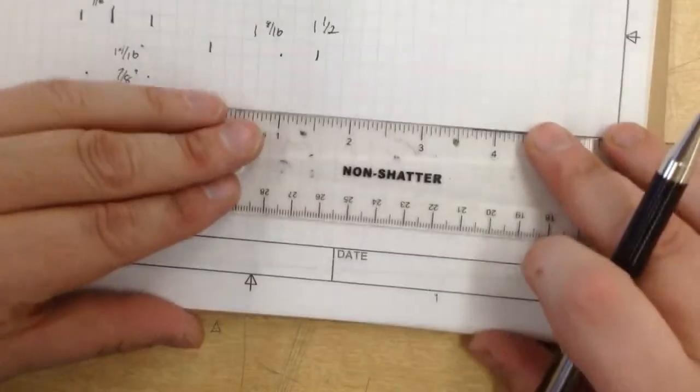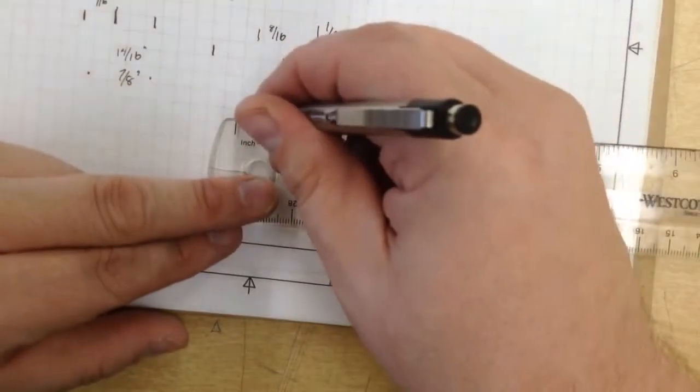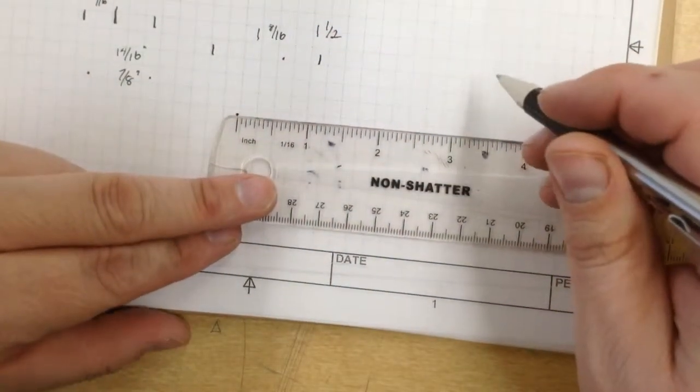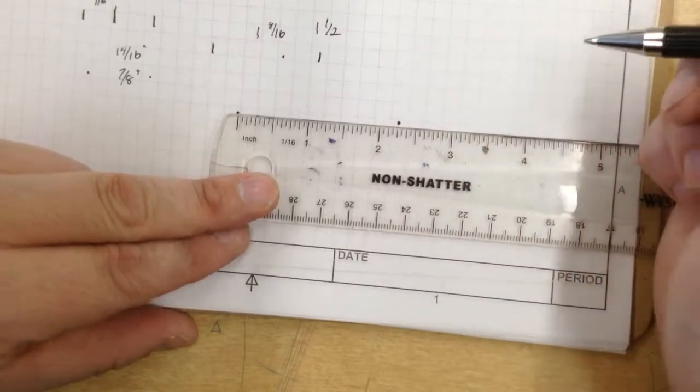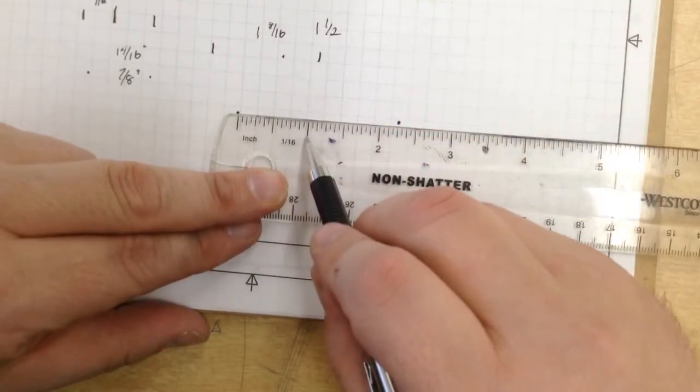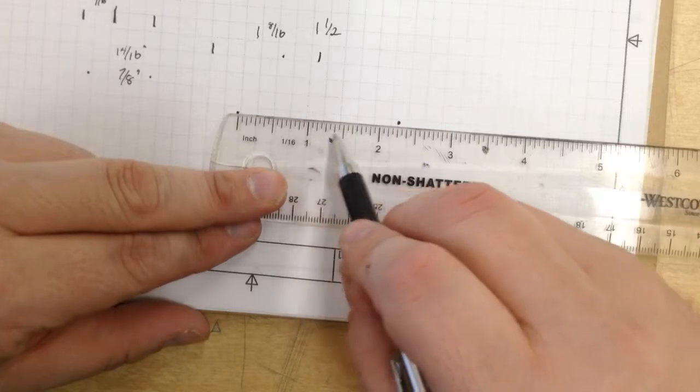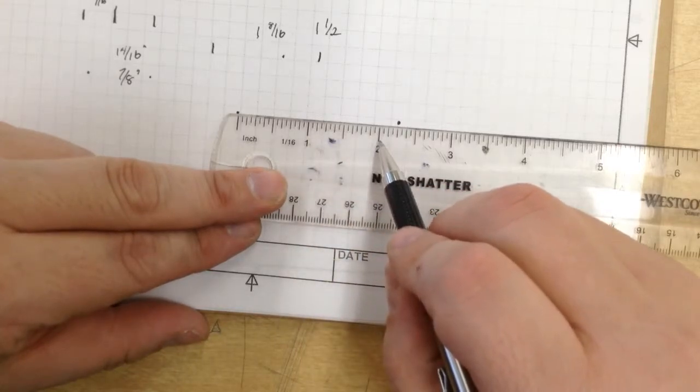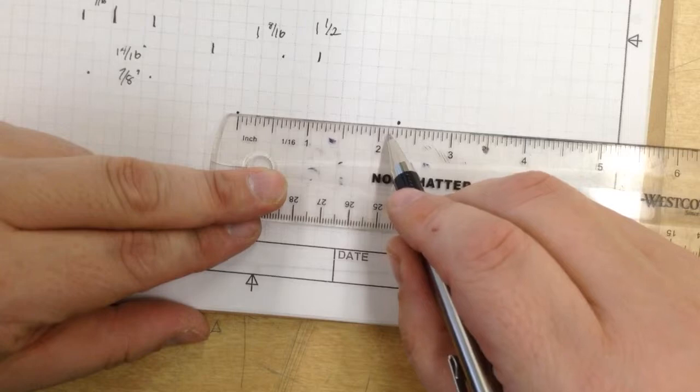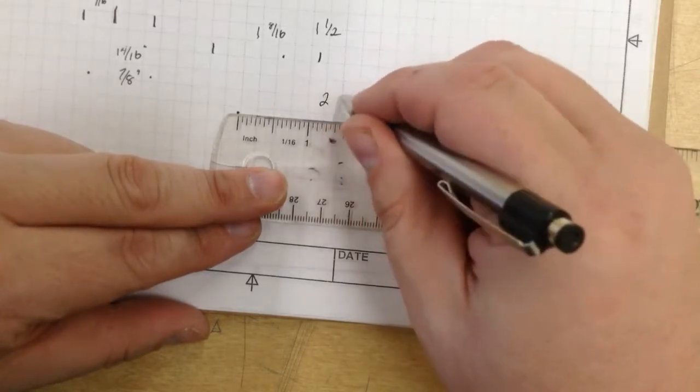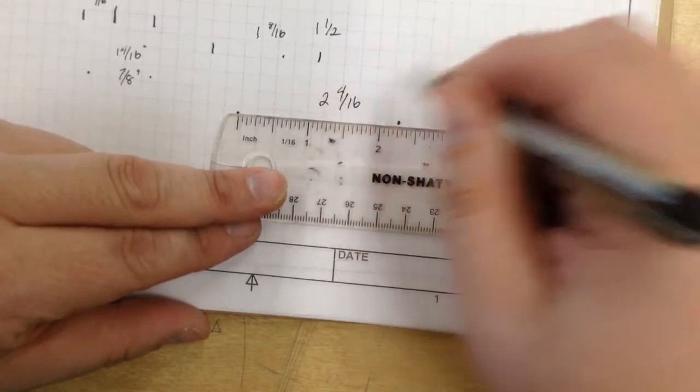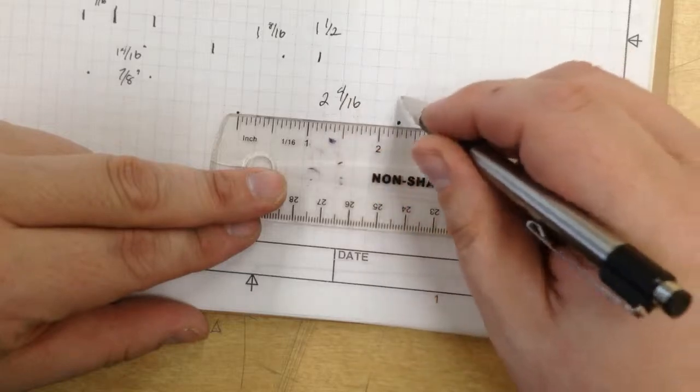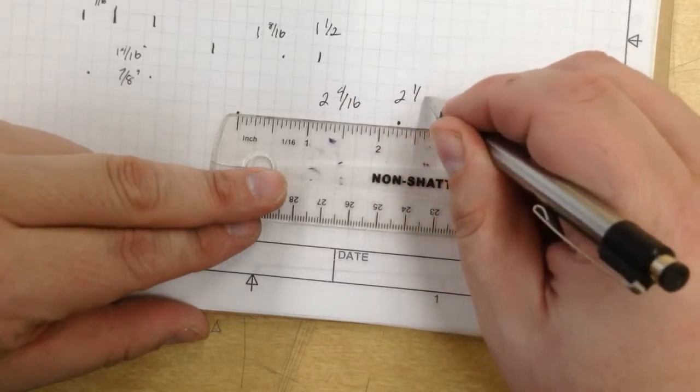If we watch this again, the demo, if I have, there's my zero and I want to go to this measurement right here. There's no reason to count all these lines, it goes up to one. No reason to count all these lines because it goes up to two. So one, two, three, four. It's two and four-sixteenths, which when we reduce this fraction, it's two and one-quarter.